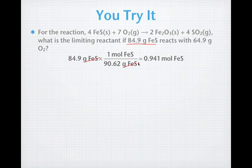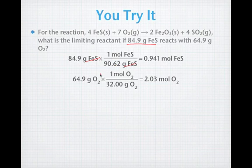Next, let's look at our oxygen. We add 64.9 grams of oxygen. The molar mass is 32.00 grams. The molar mass cancels. The grams cancel out of the grams and leaves us with 2.03 moles of oxygen. All right.